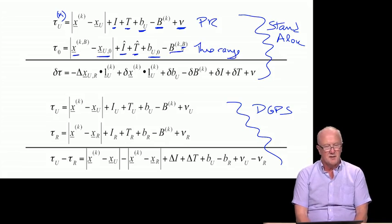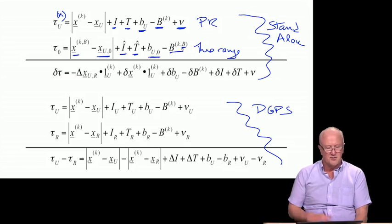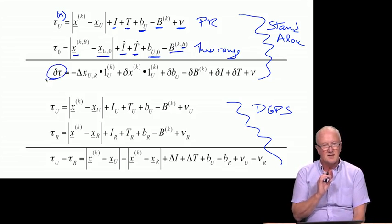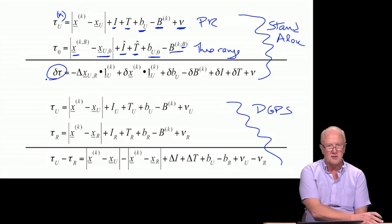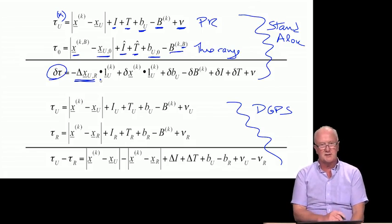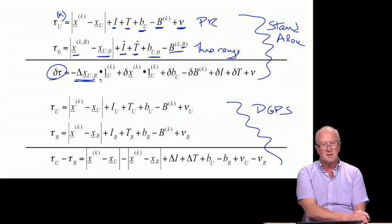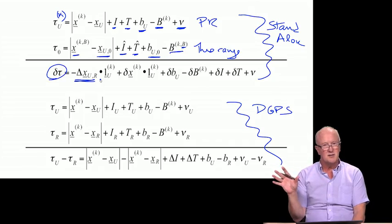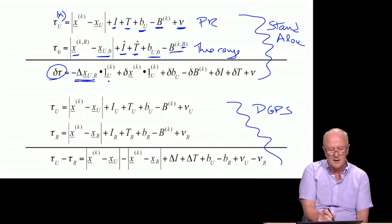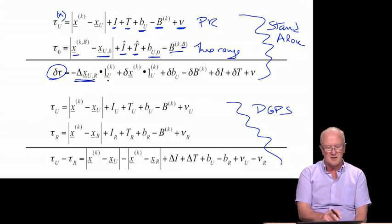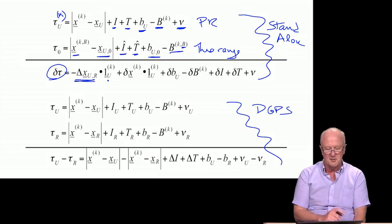So, we used the difference of these two quantities, the pseudorange, which is a measurement, and the theorange, which is a calculation, to form a thing called the residual. The beauty of that is that when we went ahead and did that, please look back a few snippets if you don't remember this, that the unknown of interest, delta x, the vector that connects the reference location to the rover location, now appears on the right-hand side of the equation, but in a linear form rather than a nonlinear form. In fact, delta x is dotted on to the unity length line of sight vector from the user to the satellite.